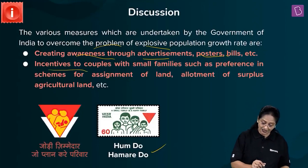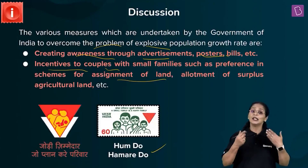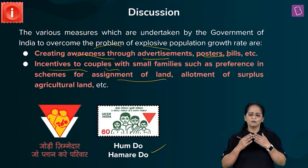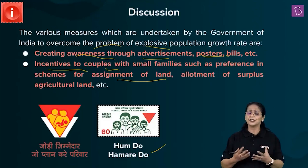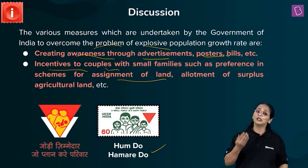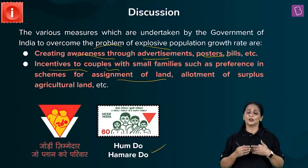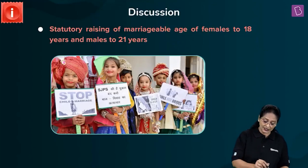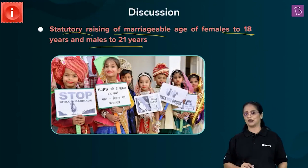Also, incentives are given to couples with small families, such as preference in assignment of land or allotting surplus agricultural land. Many people who are not educated or not aware of the repercussions of having a big family are unaware of so many things, so the government puts effort to reach the masses in all parts of the country — to villages and the remotest places. Another measure is the statutory raising of marriageable age: females to 18 and males to 21 years.